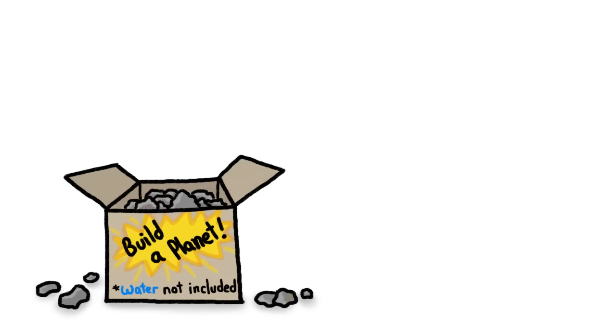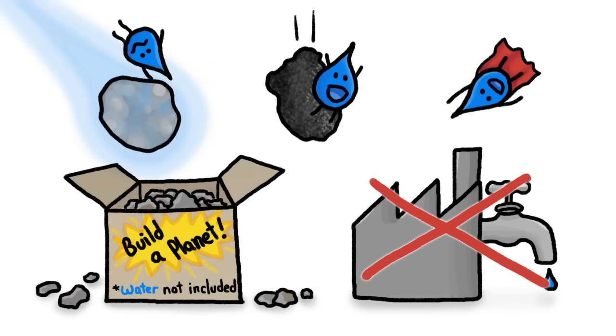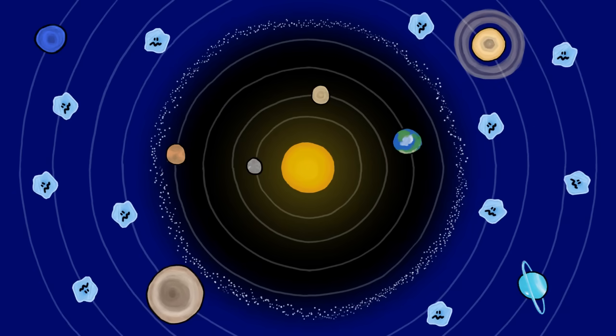Since Earth's water was neither part of the original package nor manufactured here, it must have flown in from far away, on meteoroids or comets or other bodies originating in the outer solar system, where they were far enough from the sun for frozen water to survive.